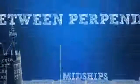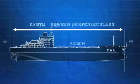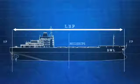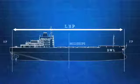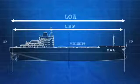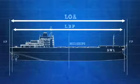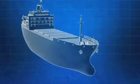Midships is the horizontal point halfway between the forward and aft perpendiculars. The length between perpendiculars, or LBP, is the total horizontal distance between the forward and aft perpendiculars. Length overall, or LOA, is the total length of a ship at its longest point. Note that this may be a little longer than the LBP because a ship can extend slightly past the perpendiculars.